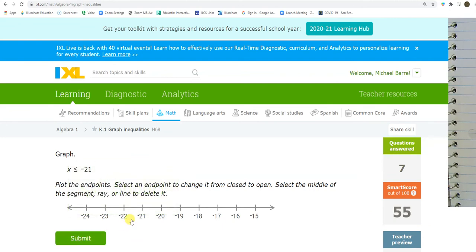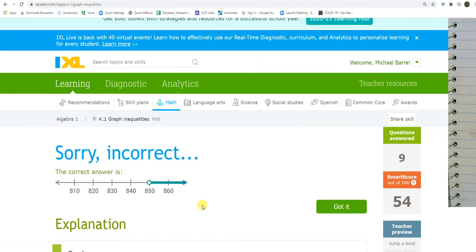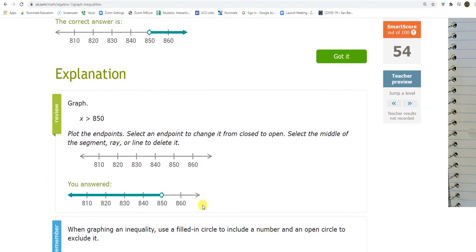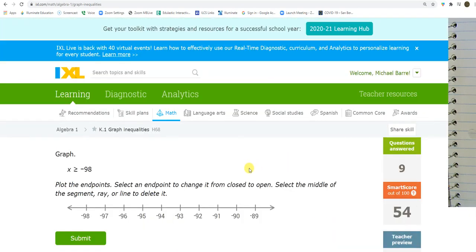Closed circle. Less than. Open circle. Less than. Oh. Oh, it was greater than. That's what you get for reading too fast.